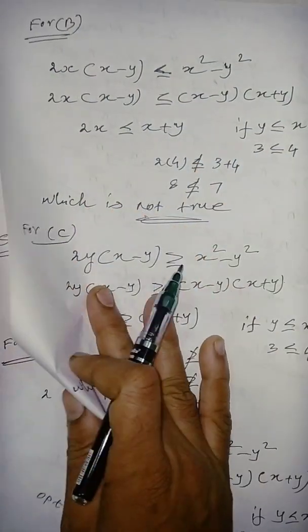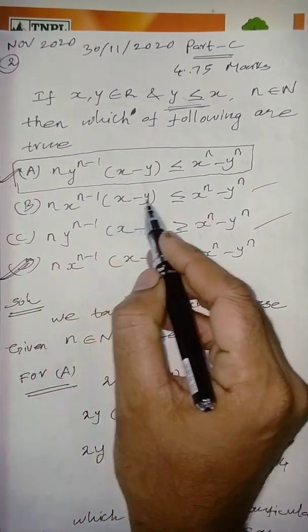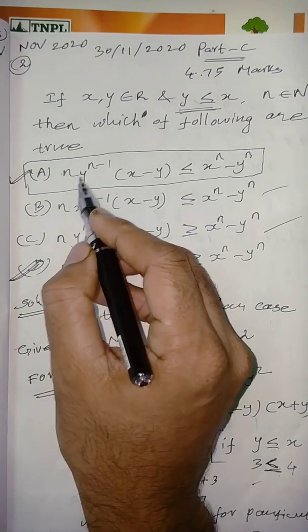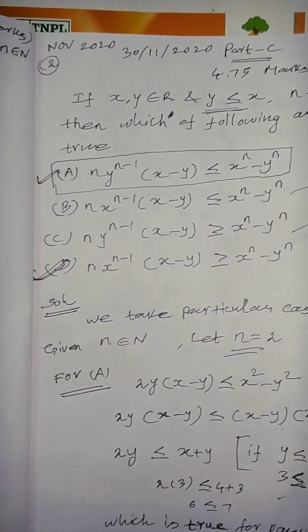Now, take the B option. N, x power n minus 1, x minus 1, x minus 1, less than or equal to. So, instead of y, here x, so, that is the difference between here and B option, okay.